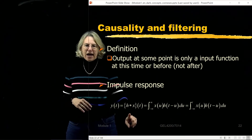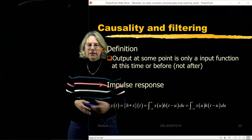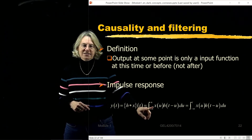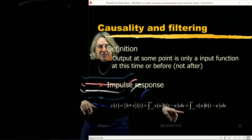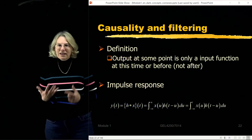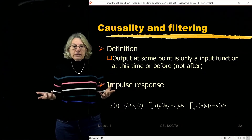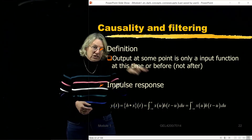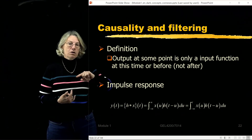The output at any given time is determined by the convolution integral. The convolution integral goes from minus infinity to infinity. If I want the output to only be a function of the input up until time t, then this integral must go from minus infinity to t. If that's not true, the output at time t would also be a function of what happens after t, which is not causal.